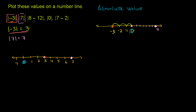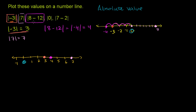Now we have the absolute value of 8 minus 12. First, let's figure out what 8 minus 12 is. If you take 12 away from 8, you're at negative 4. You can see this on the number line: take 8 away from 8 and you're at 0, then go to negative 1, negative 2, negative 3, all the way to negative 4. So this equals the absolute value of negative 4. How far is negative 4 from 0? It's 4 away, so this is equal to positive 4. We plot it right here at 4.